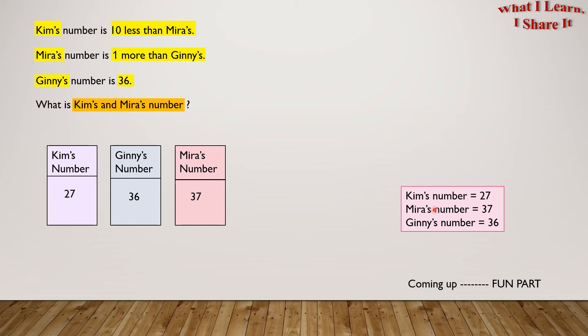So, Kim's number equals 27, Mira's number is 37, Gini's number equals 36. Yay! We solved the problem!